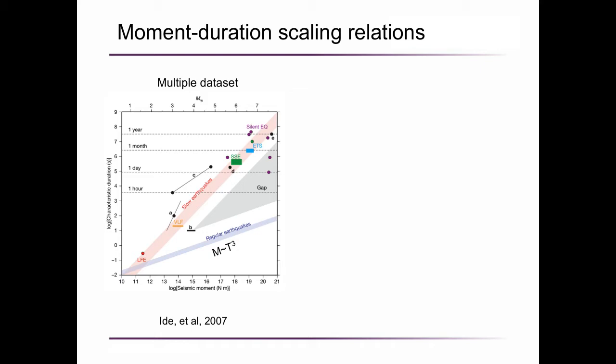For regular earthquakes, they found a cubic scaling relation. To compare with this cubic scaling, they compared the global slow earthquakes including slow slip events, low-frequency, and very low-frequency earthquakes. And they found that the scaling is linear. Therefore, they suggest that the behavior of slow earthquakes is different from regular earthquakes.